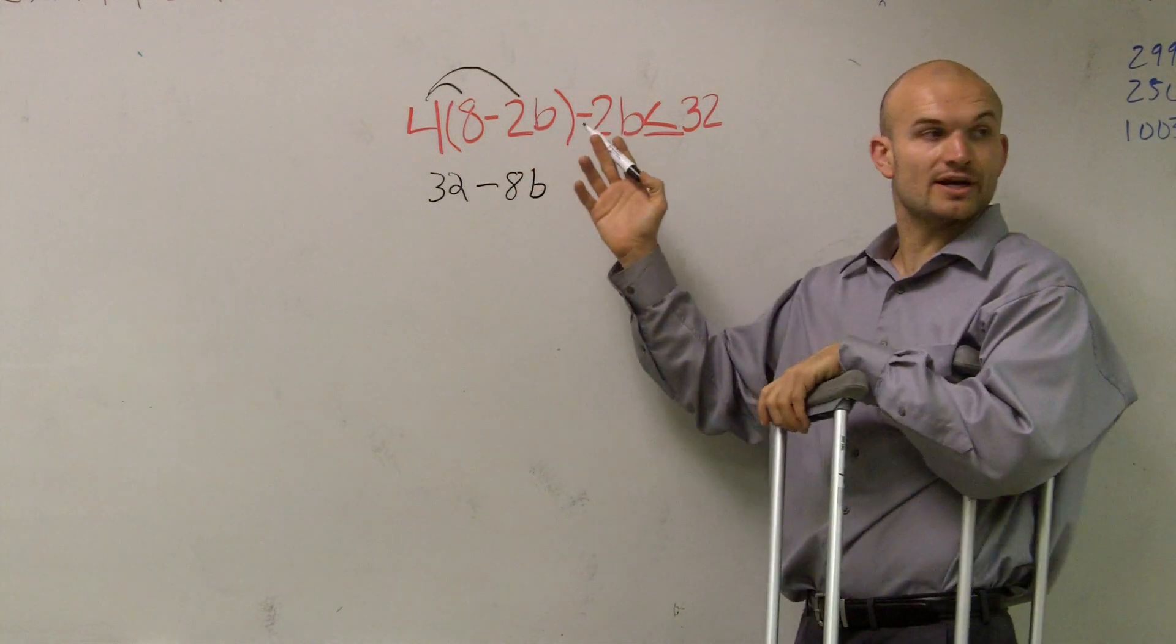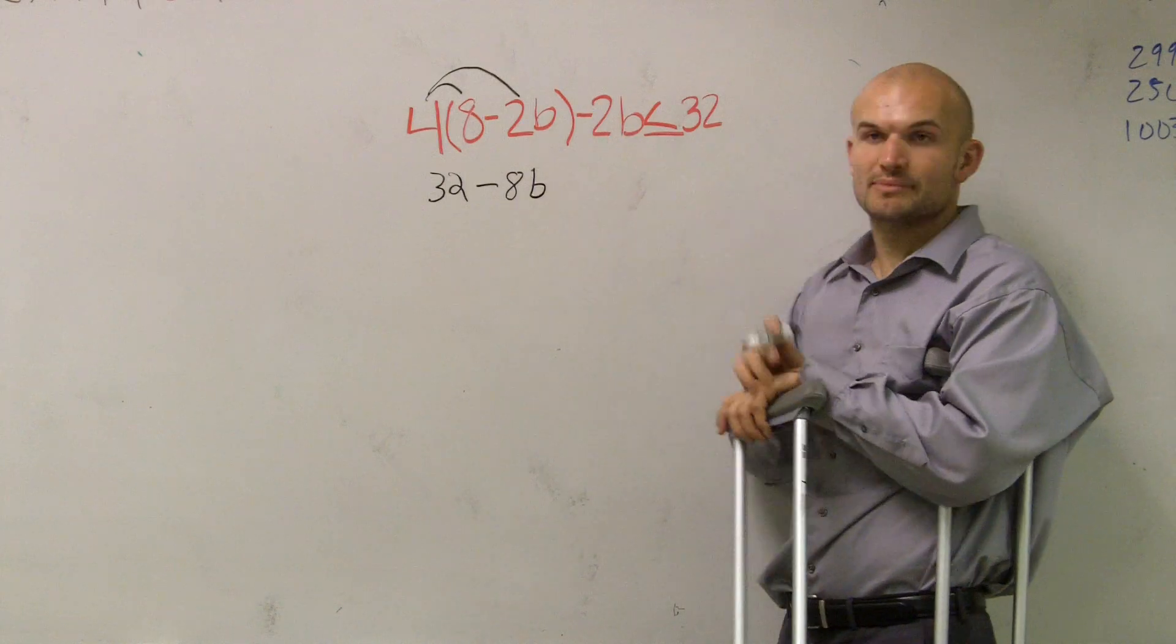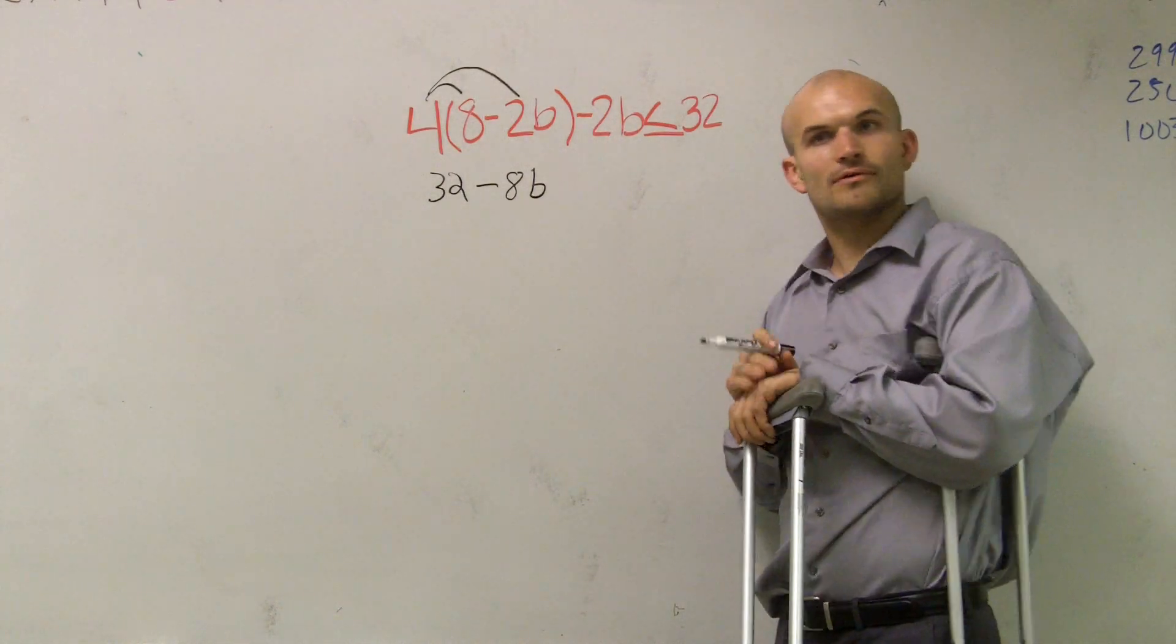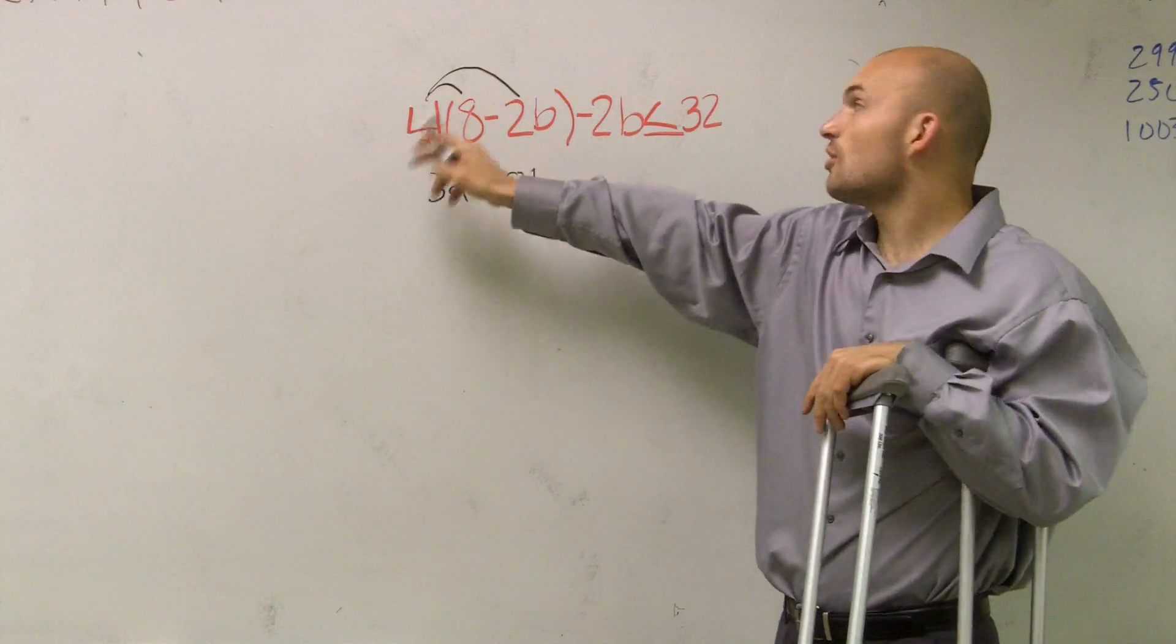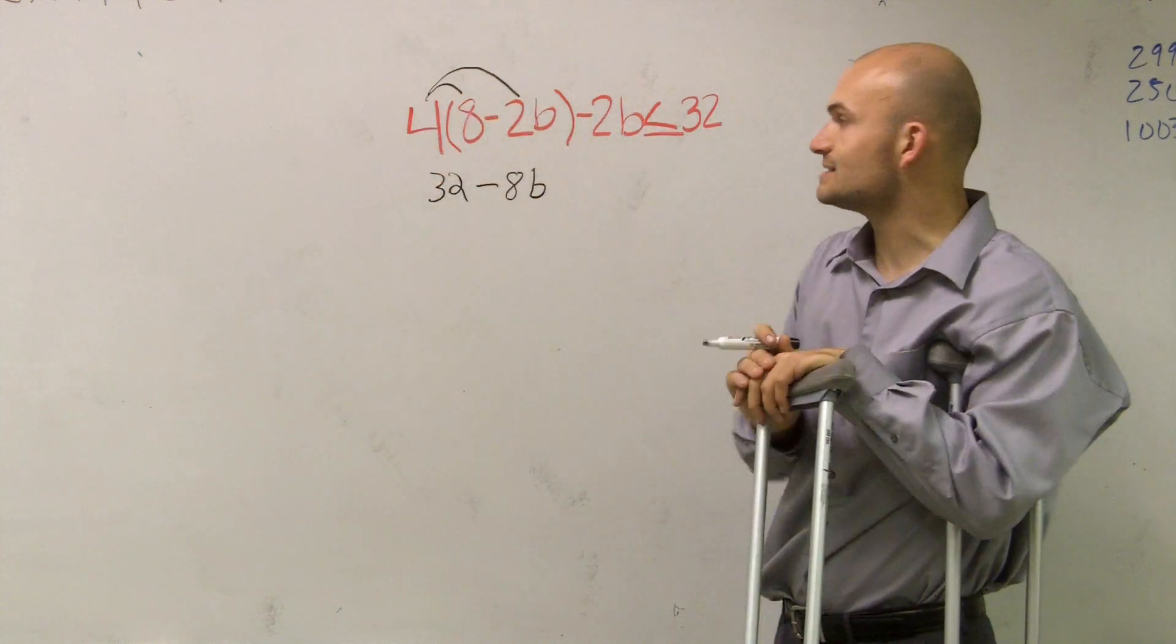Then, outside of here, it's just going to be negative two b. Now remember, this negative two is not being multiplied by four. The four only multiplies to the numbers that are inside the parentheses.